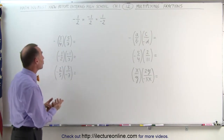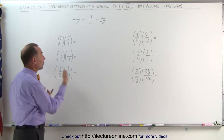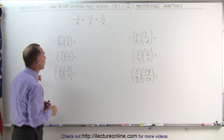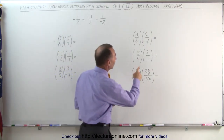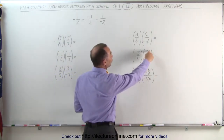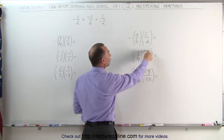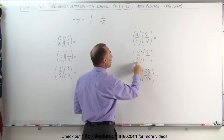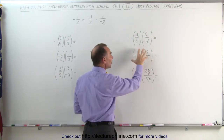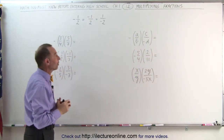In addition, sometimes you can simplify the fraction before you multiply. For example, here we have a 2 in the numerator and a 4 in the denominator. You can see that both can be divided by 2, so you can simplify the fractions before you actually do the multiplication.